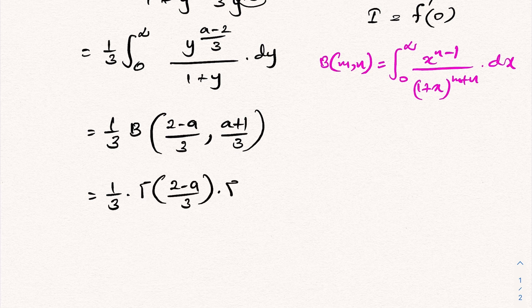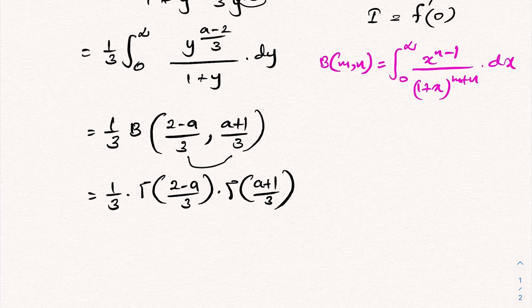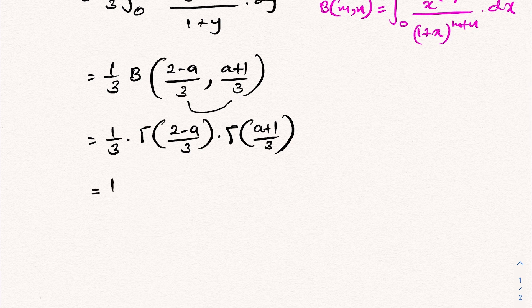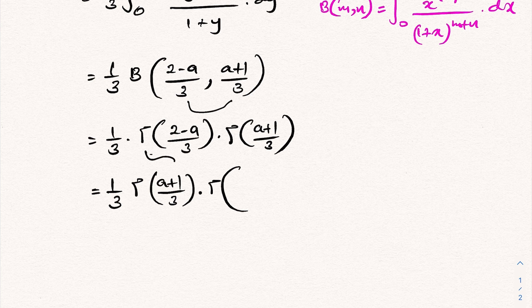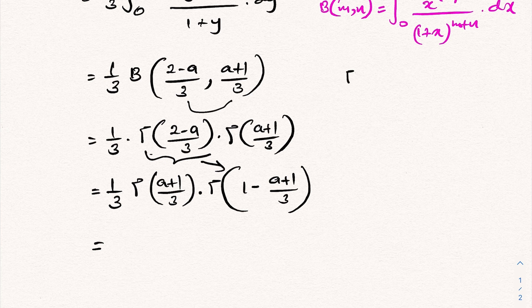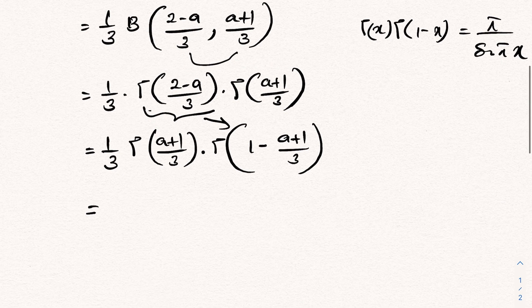Since gamma(1) equals 1, we can write 1 over 3 times gamma of (a plus 1)/3 times gamma of 1 minus (a plus 1)/3. Then using Euler's reflection formula — gamma(x) times gamma(1 minus x) equals pi over sine(pi x) — we can apply it here.